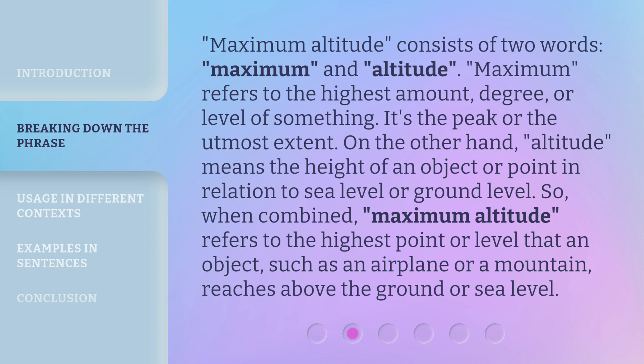Maximum altitude consists of two words: maximum and altitude. Maximum refers to the highest amount, degree, or level of something — it's the peak or the utmost extent. Altitude means the height of an object or point in relation to sea level or ground level. So when combined, maximum altitude refers to the highest point or level that an object, such as an airplane or a mountain, reaches above the ground or sea level.